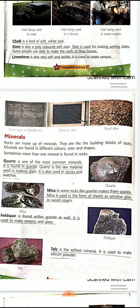Granite is shinier because it contains mica. Mica is used in the form of sheets as window glass or wood covers. Nowadays, wooden tables and doors have a very shiny layer — sometimes mica is applied before the paint. Feldspar is also found within granite and is used to make ceramics and glass. You may have seen fancy ceramic pots shaped like elephants, ducks, or turtles — those are made using Feldspar.